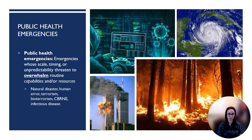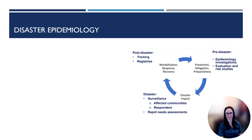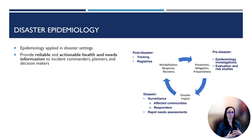This could be things like needing additional ventilators during COVID, or needing additional staffing like contact tracers or nurses to staff a skilled nursing facility during an outbreak. So what is disaster epidemiology? It's simply epidemiology applied in disaster settings. It's the provision of reliable and actionable health and needs information to incident commanders, planners, and decision makers — so the data and information we're providing is being used to inform the response.